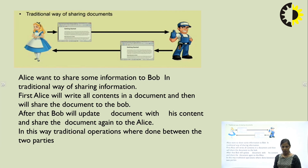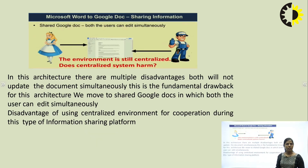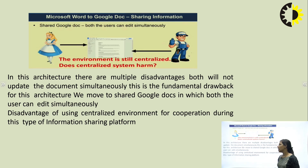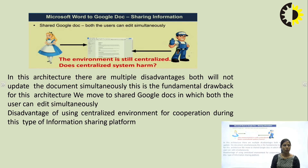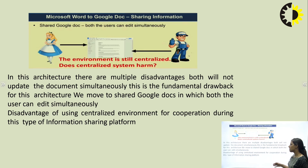To overcome this, blockchain technology came as a solution. Google provided Google Docs, in which information can be shared simultaneously — both Alice and Bob can work on the same document at the same time. This is used in day-to-day life. But there are many disadvantages because it provides a centralized environment.